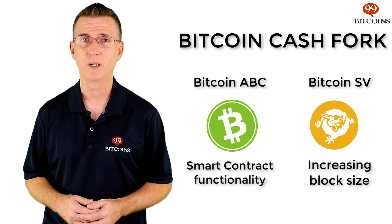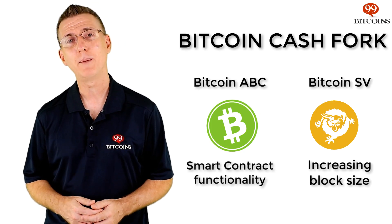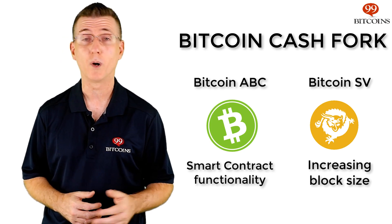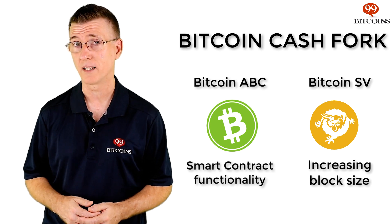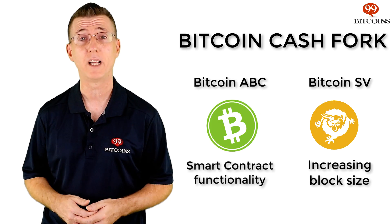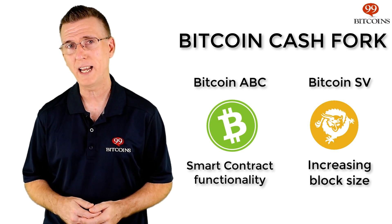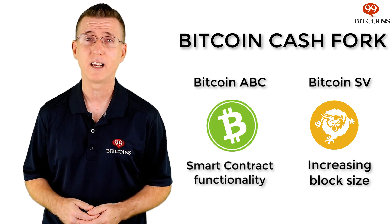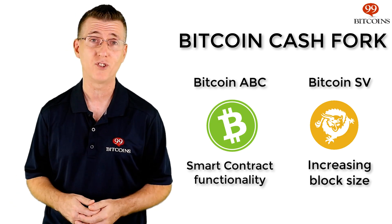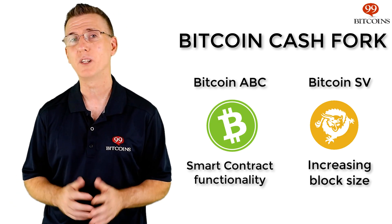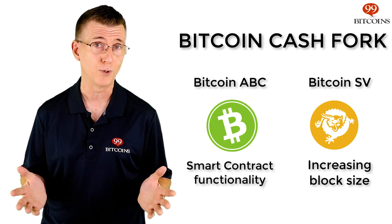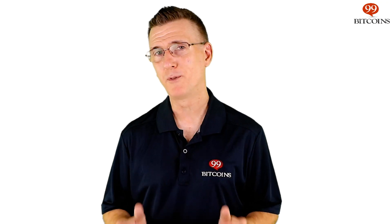There are two main differences between the two Bitcoin Cash versions. Bitcoin ABC maintained a maximum block size of 32 megabytes, while Bitcoin SV increased its block size to 128 megabytes, with additional increases planned in future updates. Additionally, Bitcoin ABC added smart contract-like functionality into its code, while Bitcoin SV chose not to accept this change. For now, it seems that Bitcoin ABC has become more popular and is considered by most as the true Bitcoin Cash.